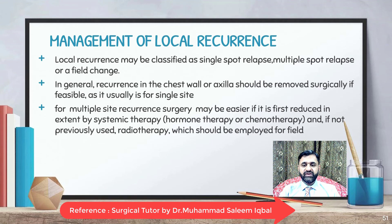Local recurrence may be classified as single spot relapse, multiple spot relapse, or a field change. Management is determined by previous treatment, site of recurrence, operability, and hormone receptor status. Patients should be assessed by a multidisciplinary team and treatment individualized. Recurrence in the chest wall or axilla should be surgically removed if feasible. For multiple-site recurrence, surgery may be preceded by systemic therapy — hormone therapy or chemotherapy — and if radiotherapy has not been previously used, it should be employed before surgery.